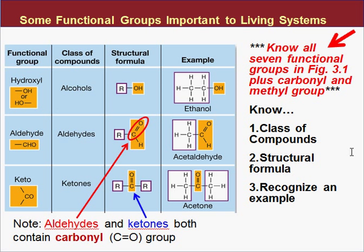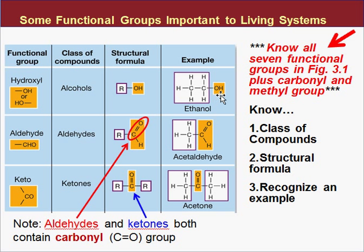You need to know these functional groups from the slides. For each one, know the functional group, the classic compounds, and be able to recognize it. The first one is hydroxyl — that's just OH, an oxygen and a hydrogen. The name tells you: hydrogen and oxygen, hydroxyl. This creates alcohols. It's just an OH added to some molecule, giving it the unique property of an alcohol.